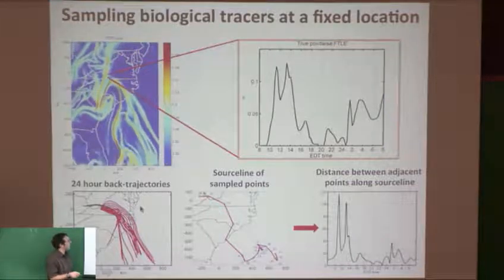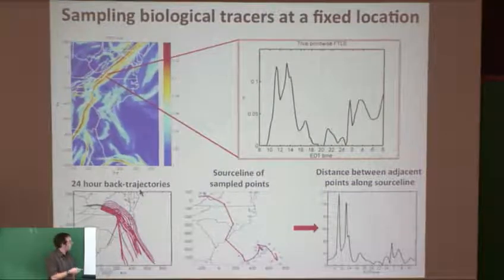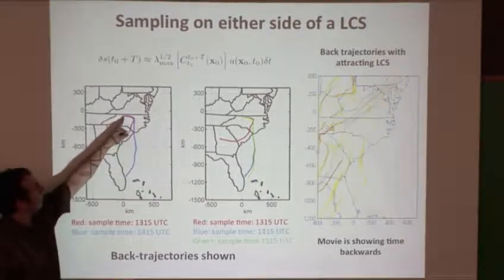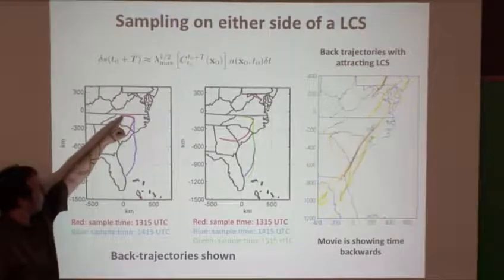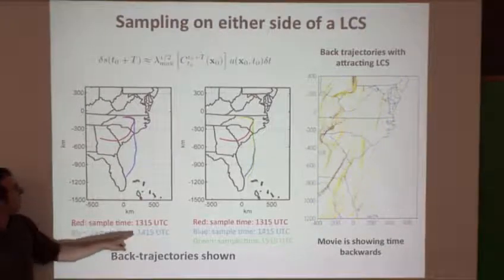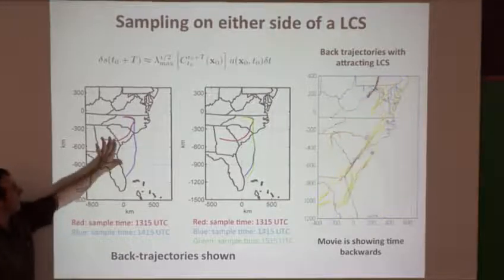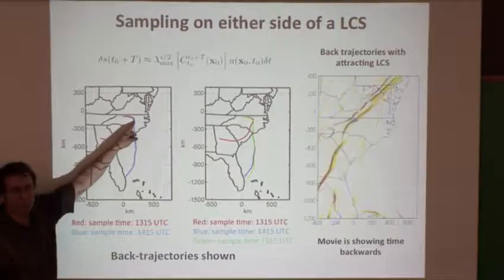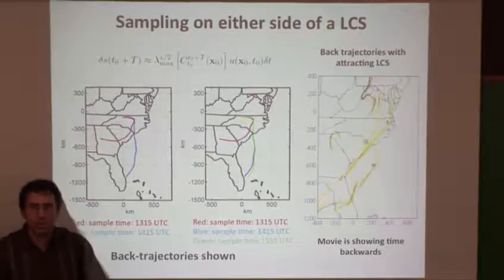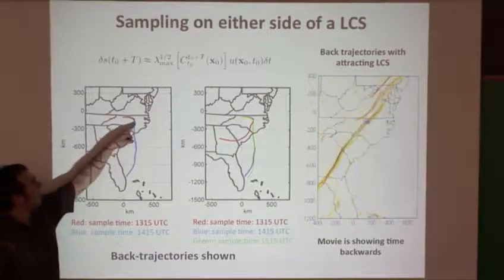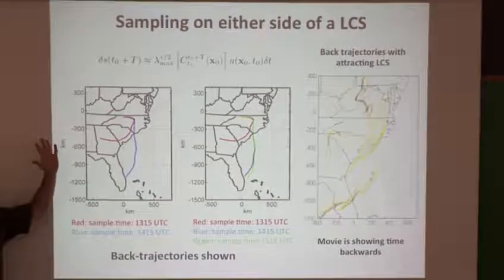If you sample on either side of an LCS, you have a sampling area that came from widely separated regions. The fastest we can do sampling is once per hour. Two parcels sampled at 1:15 and 2:15, followed backward in time, have very different origins, though there is some delay because FTLE only tells you how trajectories eventually separate. We probably capture the most dramatic features, but separation is occurring right at the sampling location.